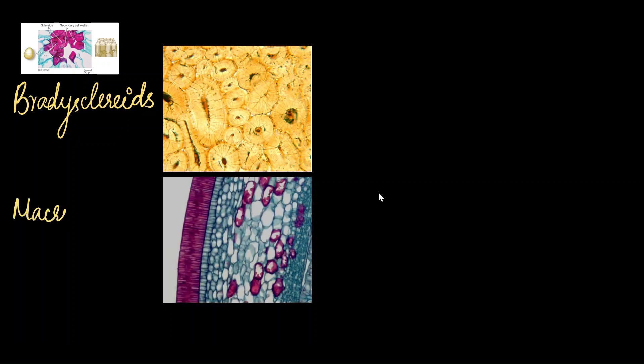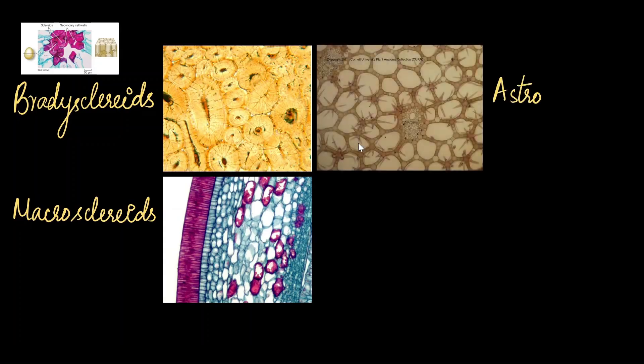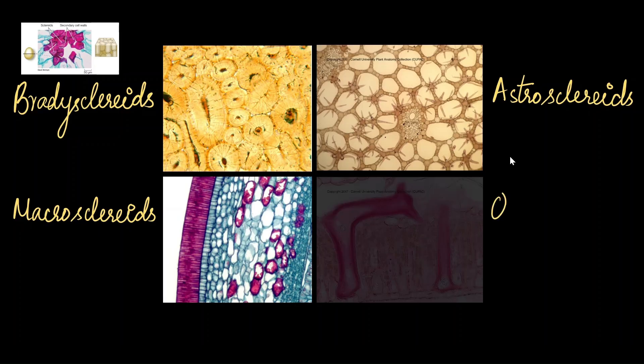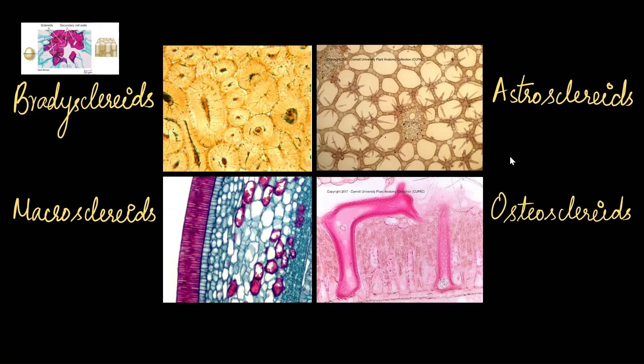Then we have macrosclereids, which are found in the outer coating of legumes. That's why the legume seed coat is really tough. We have these specialized astrosclereids that are star-shaped. These are found in the floating leaves of water plants like water lily. They provide the structural support to the leaves and it helps them to withstand the water currents. And finally, we have osteosclereids, which are bone cells. They are also found in the seed coat of legumes, seeds, etc.